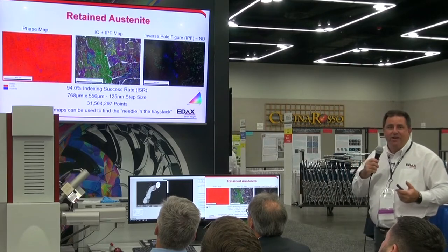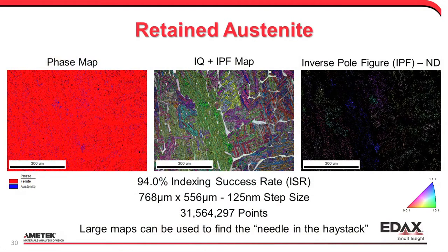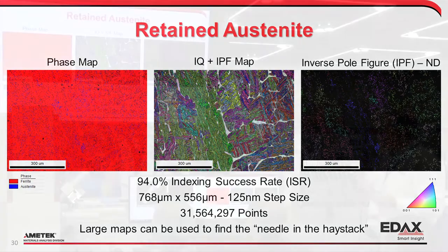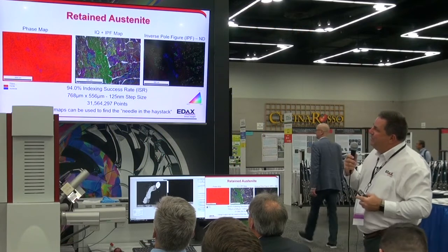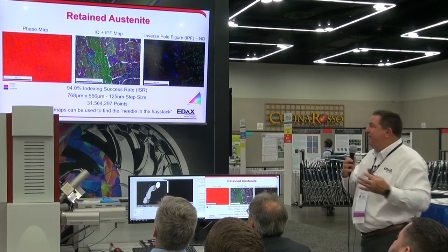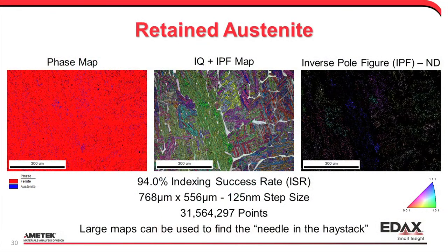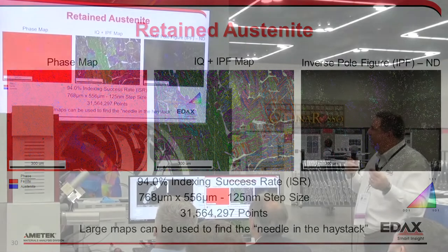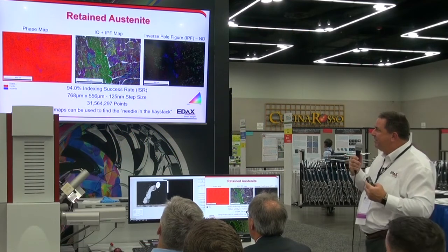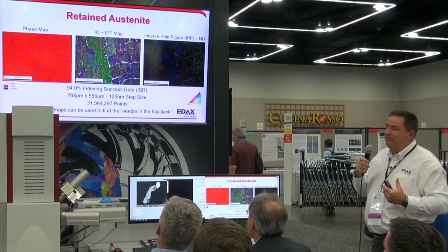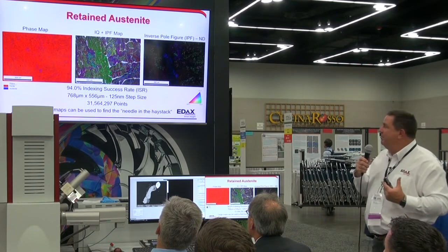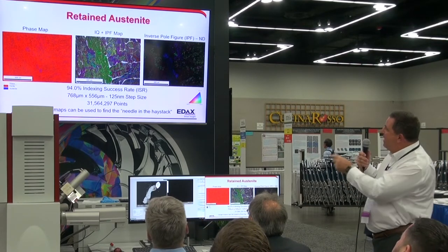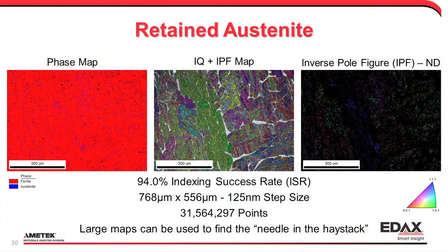Another example is measuring retained austenite in steel samples. Retained austenite occurs as material cools from the FCC to BCC phase, and its amount influences final mechanical properties. The austenite distribution is non-uniform, so to get good statistical collection you need a fine step size — about 100 nanometer step size covering a very large area — roughly 30 million data points for what we term the needle-in-the-haystack problem. We can start to see where austenite packet structures are within the ferritic microstructure.